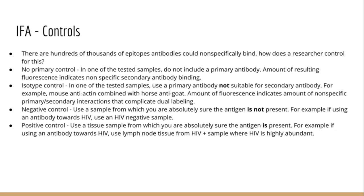For example, if you have a horse anti-mouse secondary antibody, use a goat primary antibody — if the horse anti-mouse antibody is binding the goat primary antibody, you know there is cross-reactivity, and thus there may be cross-reactivity in your dual labeling experiment, because a horse anti-mouse should not be binding to a goat primary antibody. This is known as an isotype control.